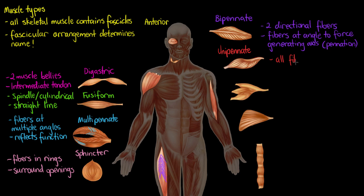The third and last type of pennate muscle is a unipennate. In a unipennate muscle, all of the muscle fibers are on the same side of the tendon, but they're still running obliquely. An example is the extensor digitorum muscle on the posterior side of the arm, where all fibers run on one side of its tendon.